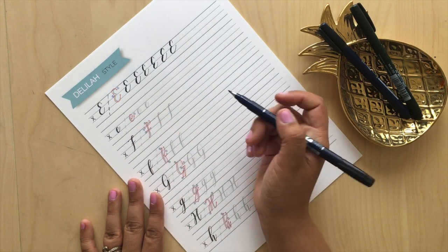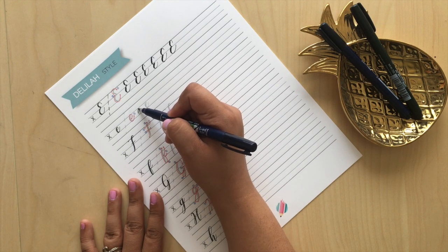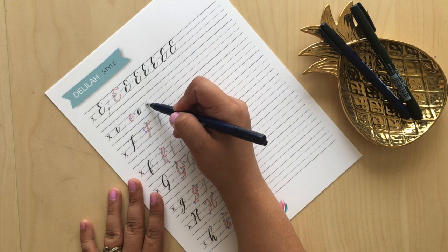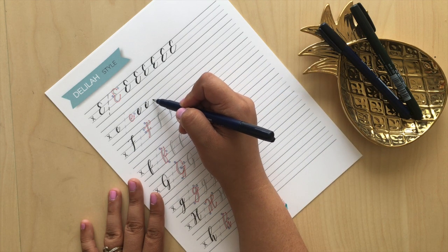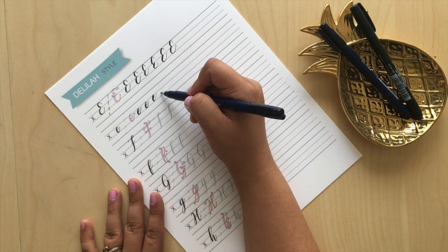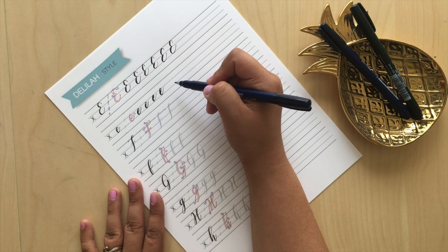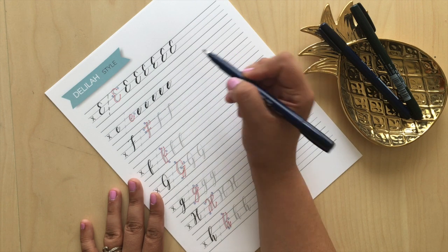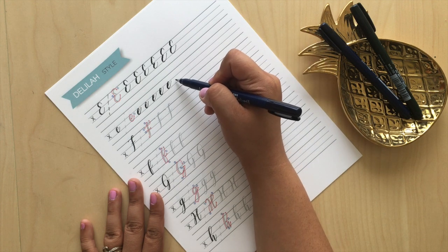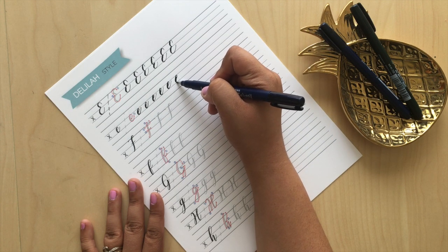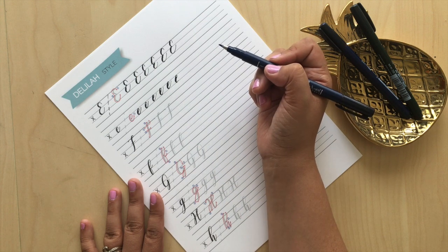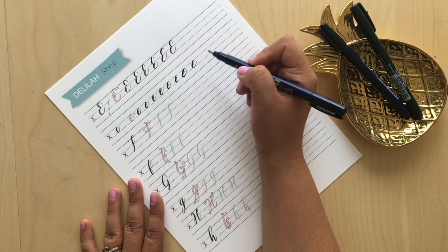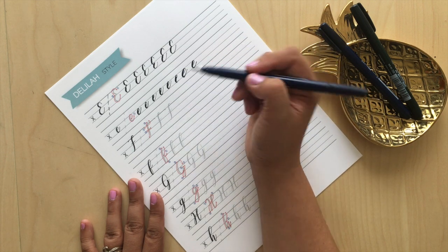When you're doing the lowercase e, you're starting with a thin stroke into a thick and then release with a thin. Always be aware of your transitions and be sure to leave enough room between this thin stroke and where your thick stroke is going to be, because sometimes you could do something where you're not giving yourself enough room. You want to make sure you can truly see that it's an E and not like a weird C.